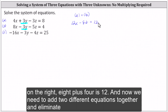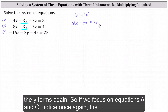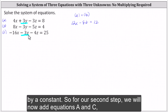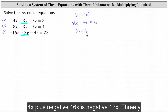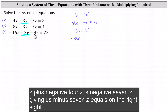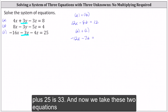Now we need to add two different equations together and eliminate the y terms again. If we focus on equations A and C, notice the y terms are already opposites, so we don't have to multiply either equation by a constant. Adding equations A and C: 4x plus negative 16x is negative 12x, 3y plus negative 3y is zero, negative 3z plus negative 4z is negative 7z, giving us negative 12x minus 7z equals 33.